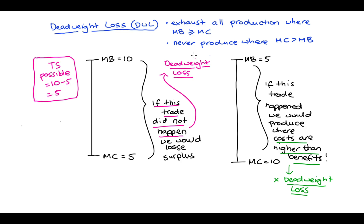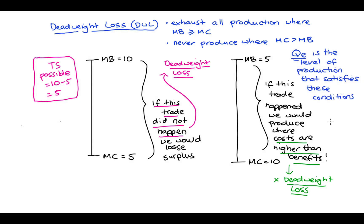Deadweight loss is really framed as an issue of allocation. To be perfectly efficient, we need to exhaust all production when marginal benefit is greater than or equal to marginal cost, because then either the consumer or producer can get some surplus. We should not produce if the marginal cost is higher than the marginal benefit. Deadweight loss is about producing exactly the right amount. I'll refer to that efficient quantity as QE — the allocatively efficient quantity.